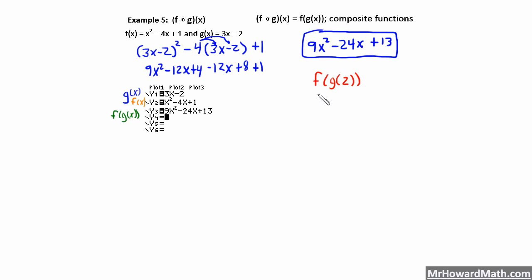So I wanted to show you really what's going on here. Let's say you were asked to find f of g of 2. Well, there are really two ways to do it. Remember this means — take g first, if you haven't watched the first video you need to — take g of 2 first. So g of 2 would be: we plug in an x value of 2 into our g of x and see what that result was.